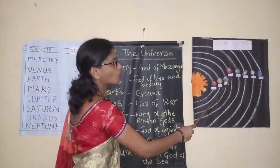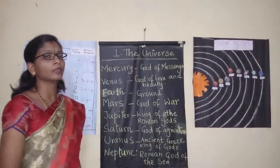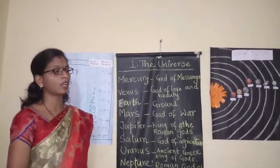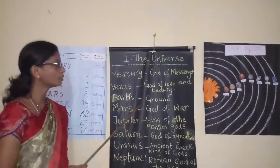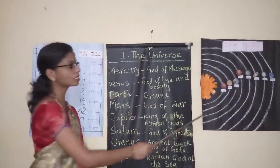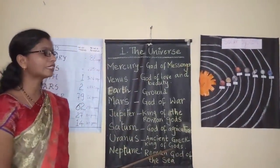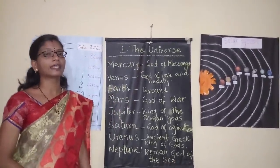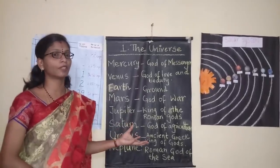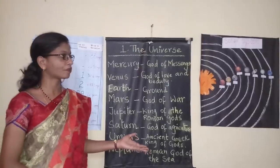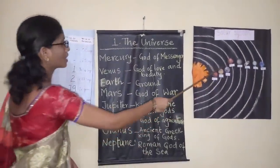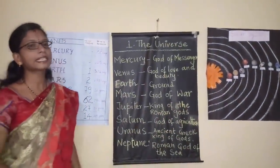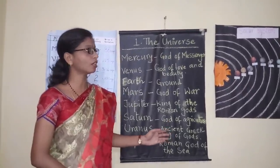The fourth planet in the solar system is Mars. The Mars planet is reddish in colour and is also known as the red planet. It is known as the Roman god of war. Recently it was discovered that Mars has water in the form of ice, and scientists are trying to discover whether life could be possible now or in the near future. Mars takes 687 days to complete one revolution around the sun.